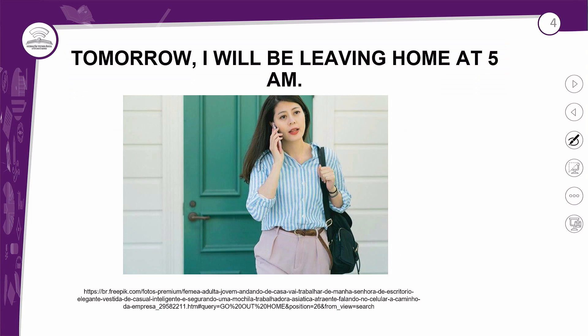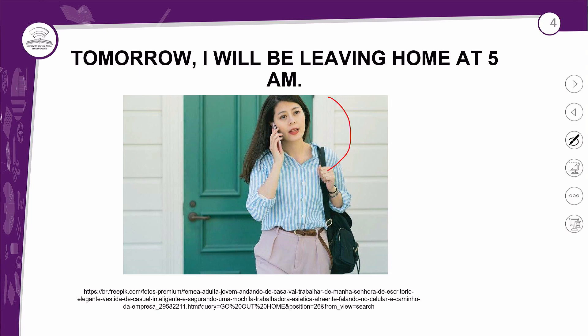Começamos com ela — claro que a imagem vai ser alterada. A flight attendant, a comissária de bordo, fala o seguinte: 'Tomorrow, I will be leaving home at 5am.' Aqui nós temos a estrutura de três verbos: 'will', que você já conhece, que é o verbo modal do futuro simples. Ele não tem tradução — o que ele faz é dar a ideia de futuro para o verbo que vem logo em seguida.